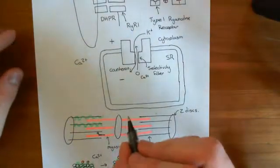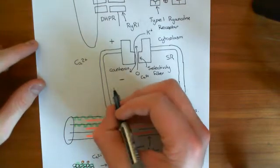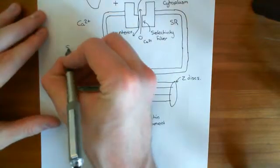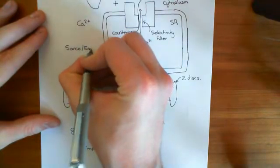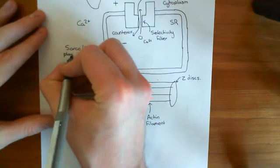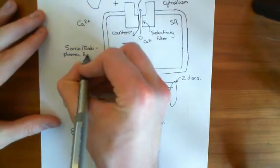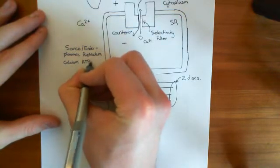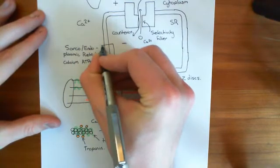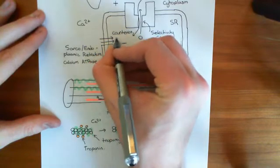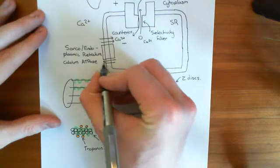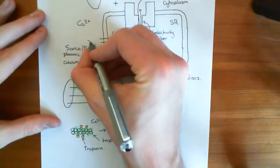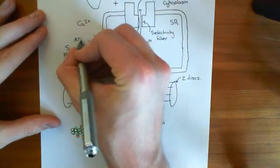There is a pump in the membrane of the sarcoplasmic reticulum which will return calcium into the sarcoplasmic reticulum. This pump is known as SERCA — the sarco/endoplasmic reticulum calcium ATPase. This pump moves two calcium ions into the lumen of the endoplasmic reticulum, and in exchange it moves three protons back out of the lumen into the cytoplasm. It also hydrolyzes ATP in this process — a single molecule of ATP is hydrolyzed to ADP and inorganic phosphate.